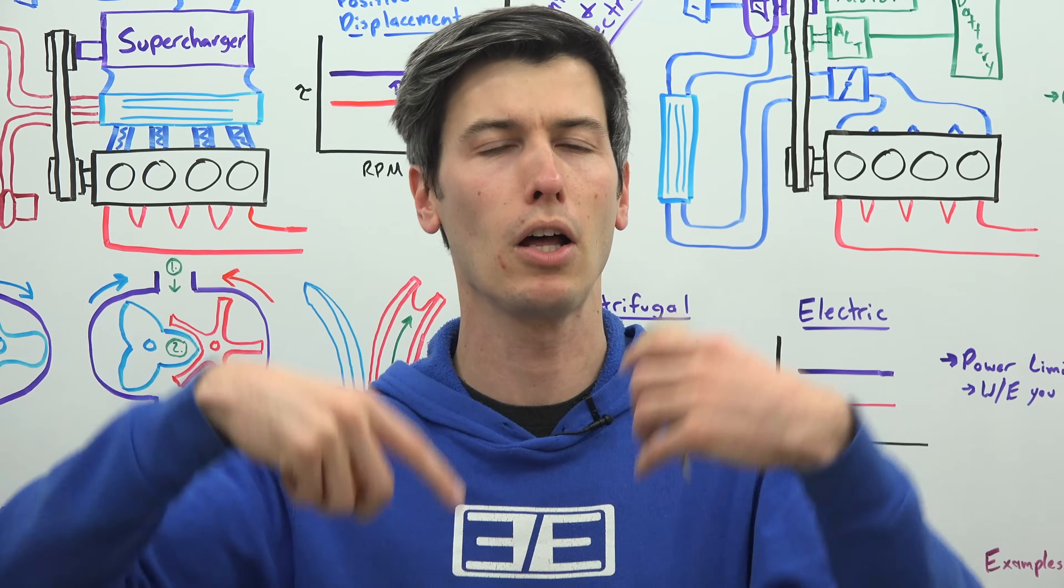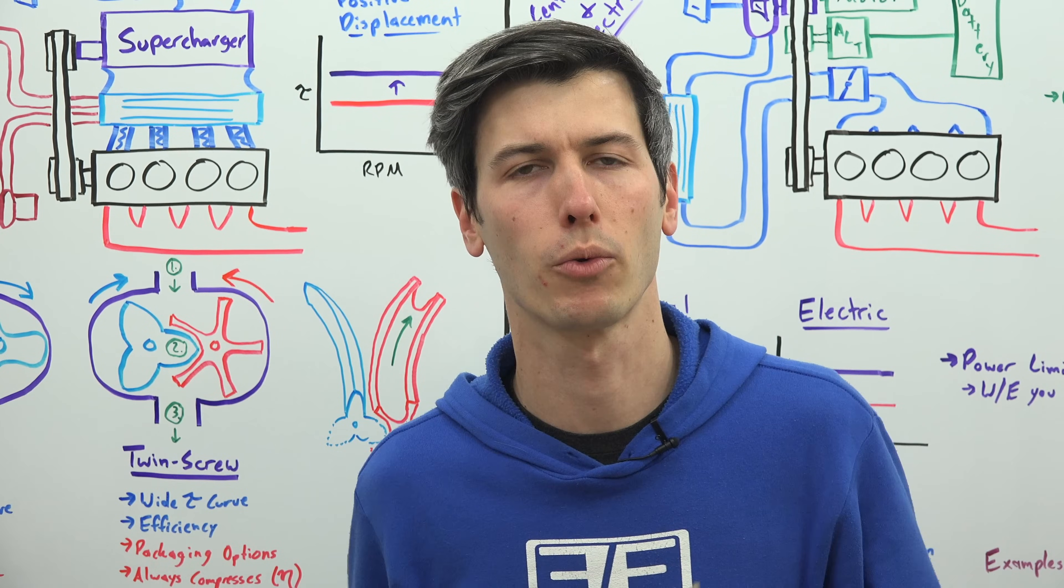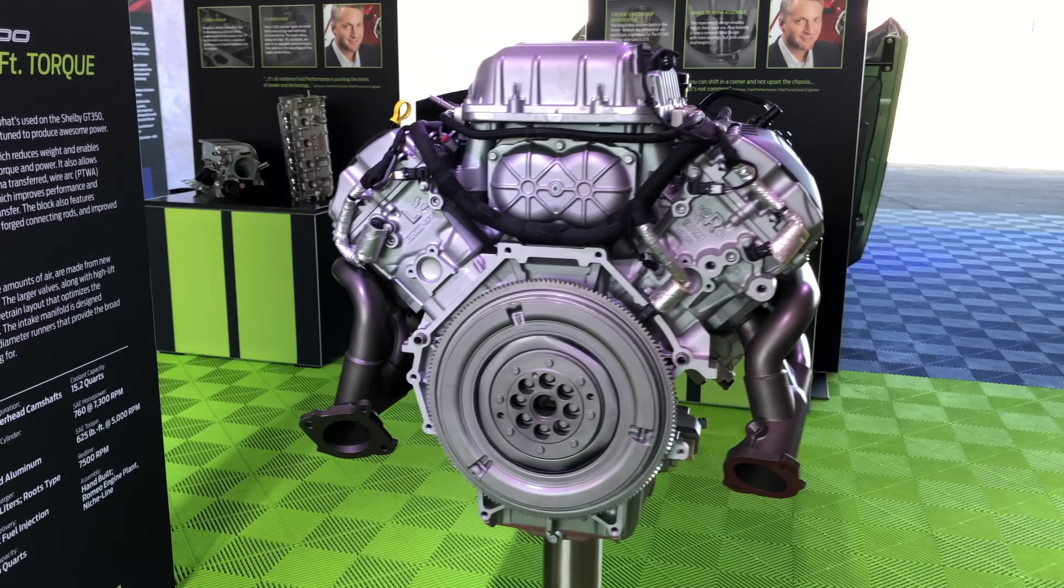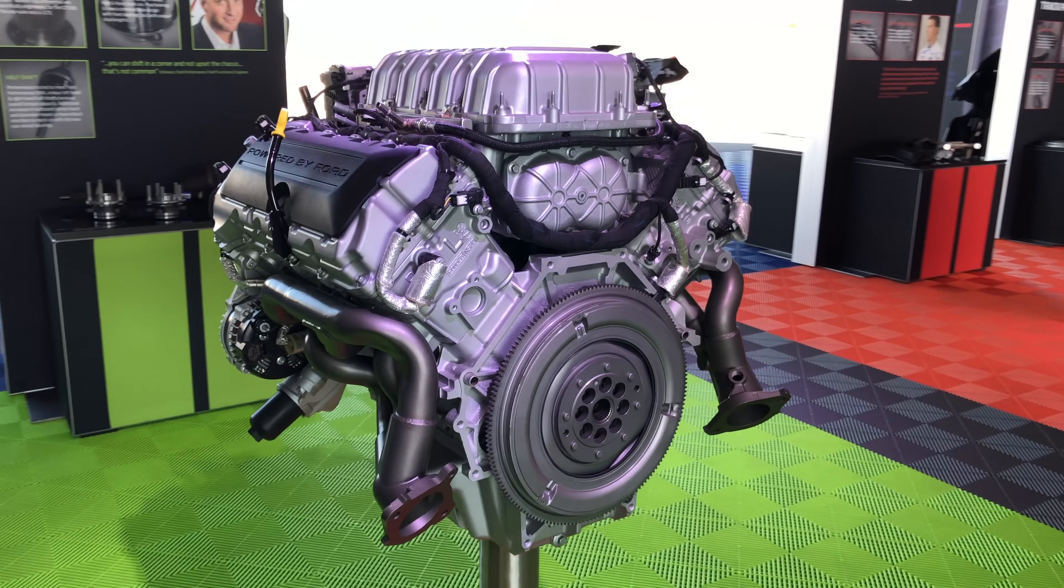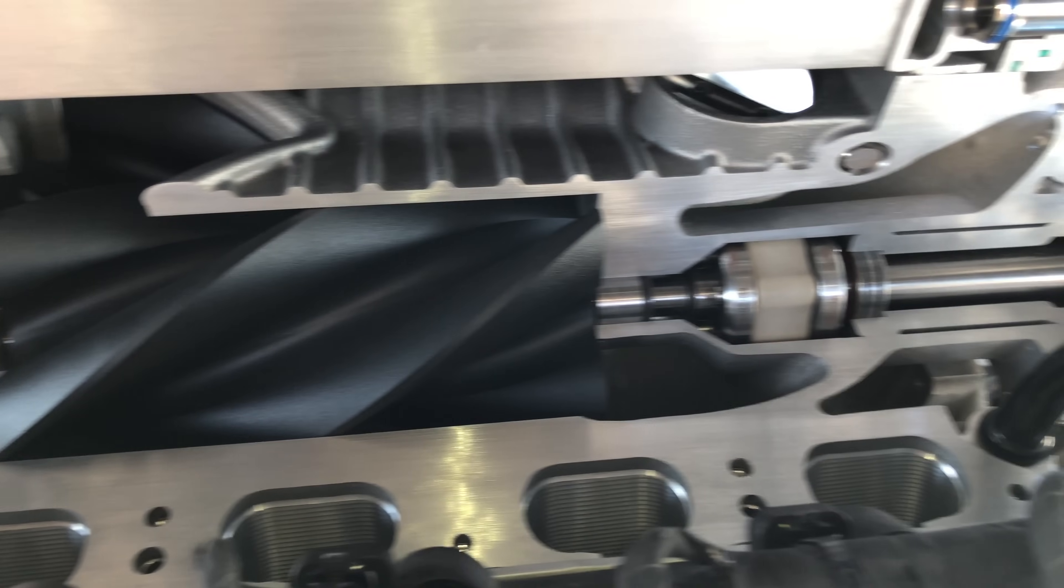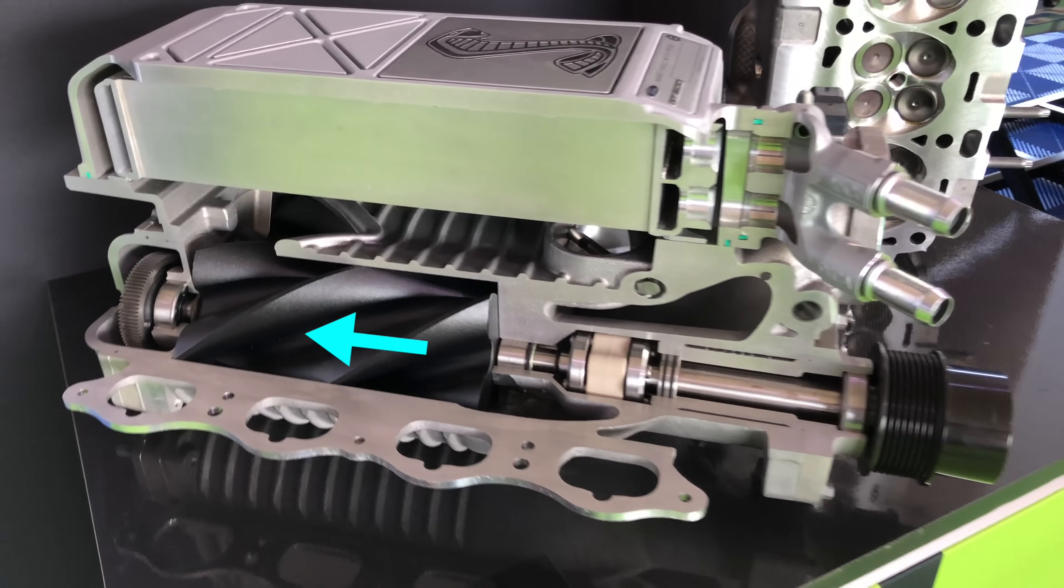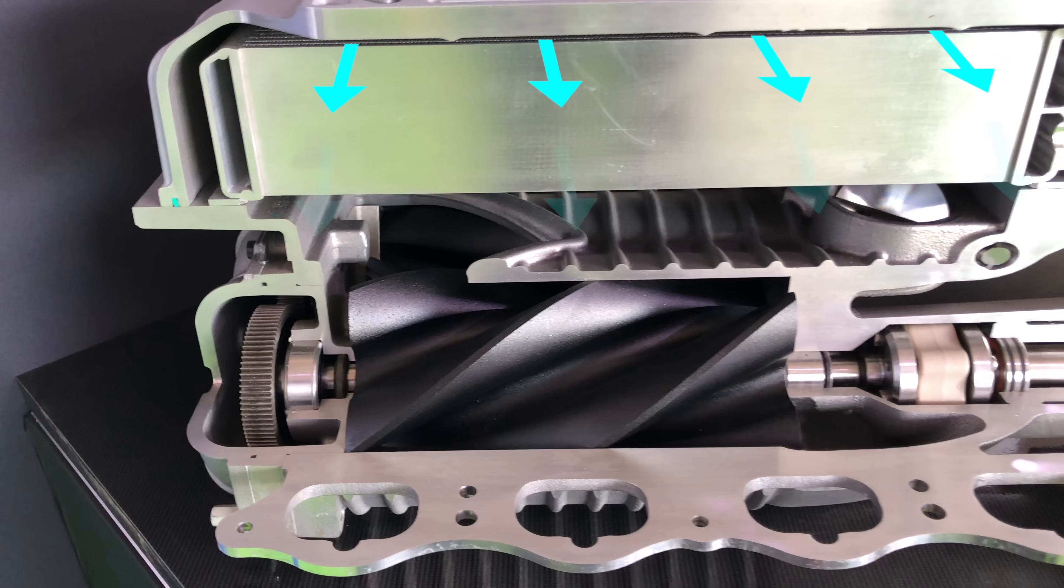So now let's look at a couple of actual examples. First up is a Roots supercharger made by Eaton used in the new Shelby GT500. You'll notice that it has a four lobe design instead of three and a high twist with 160 degree lobes. Air comes in through the throttle, travels over to the rotors,